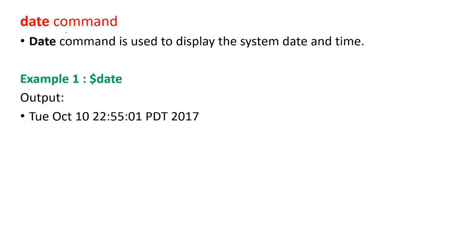Next command we will see is the date command. Using the date command we display the date and time. On the terminal just type 'date' and it will display the current date and time. The date command can be used with various options in various styles.